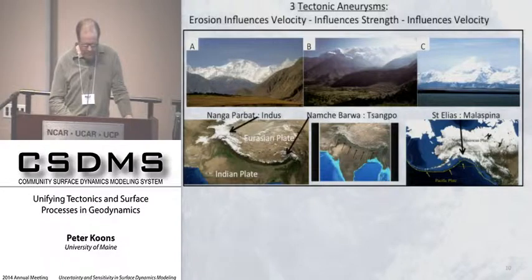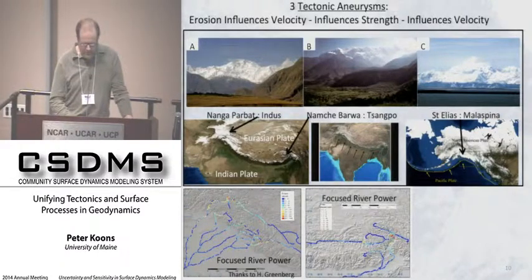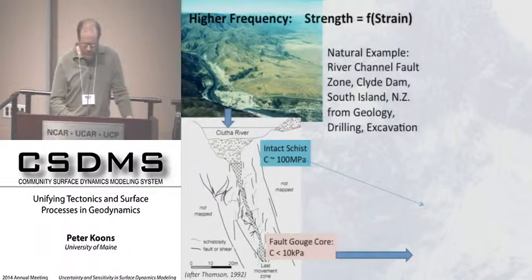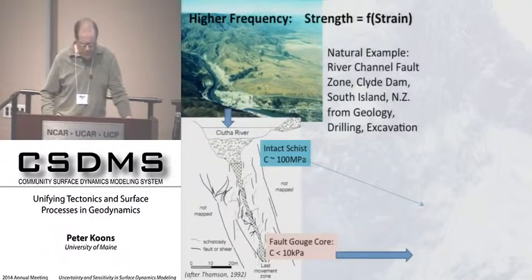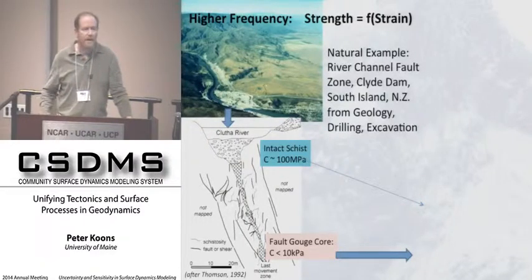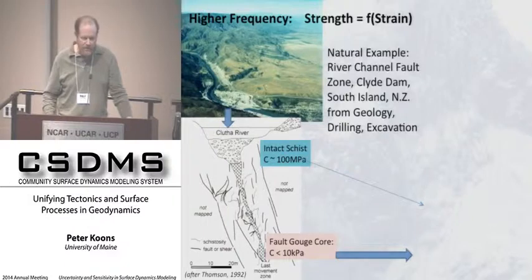Three examples we've discussed: Nanga Parbat, where the erosional regime is focused river power; Namche Barwa at the other side of the Himalayan chain, also focused river power; and St. Elias, where focusing occurs through glacial erosion. That coupling is useful and something we've discussed for a while. Now I'd like to look at the higher-frequency case in which strength is coupled to strain — to displacements. This is not something new to those of us who deal with faulting; a faulted region produces a gouge zone and weak zone. The question is how this impacts in a three-dimensional way on the evolution of topography.